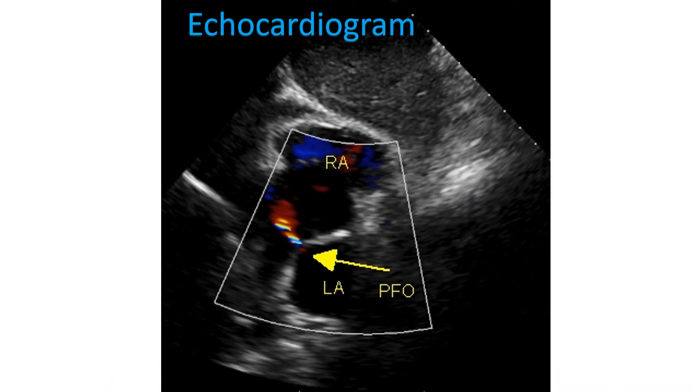PFO can be documented by an echocardiogram. It will also show right-to-left shunting during certain types of strain, indicating the risk of paradoxical systemic embolism.